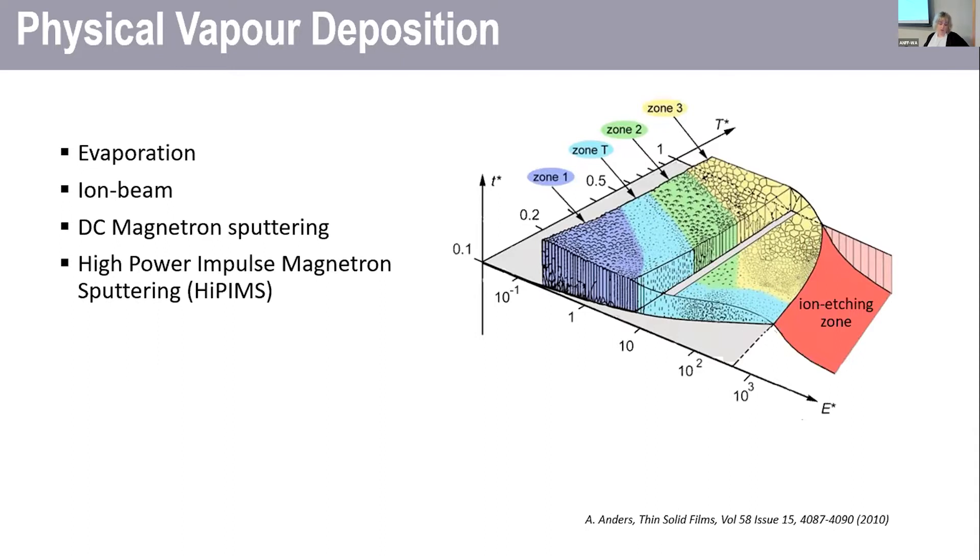Moving along in the low energy regime, moving along the temperature axis, you go from a loosely packed fibrous film right up to something that's more densely packed and polycrystalline. Although you can increase the density of a film by increasing the temperature at which you grow it, you're still going to get, in this low energy range,